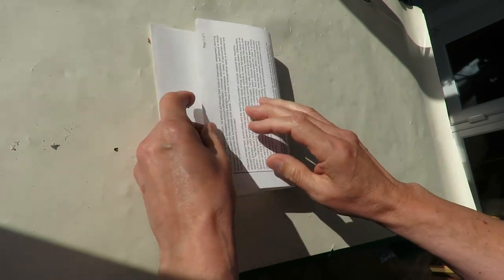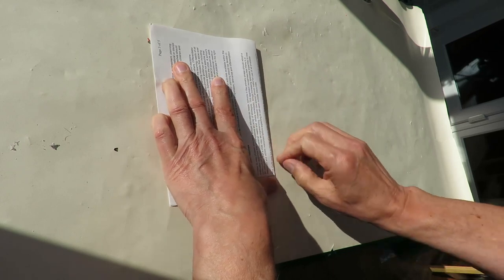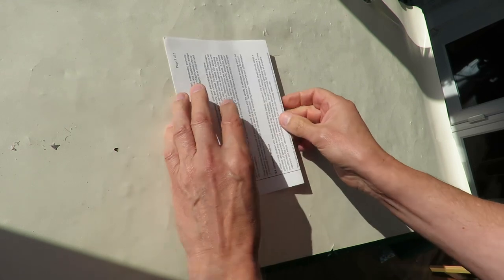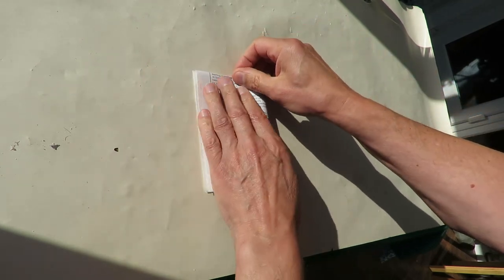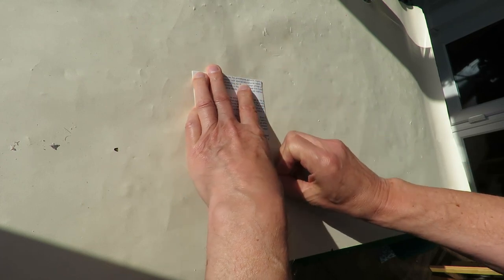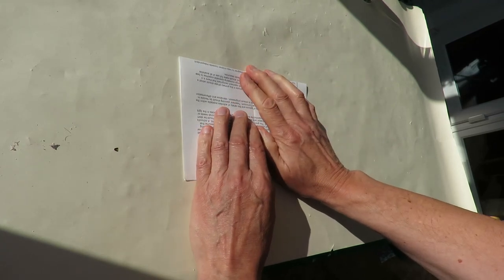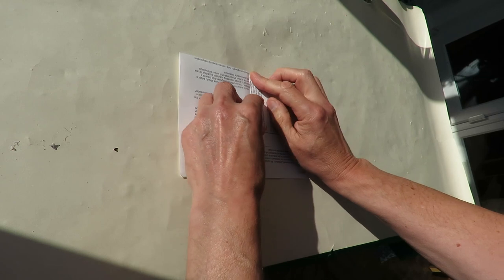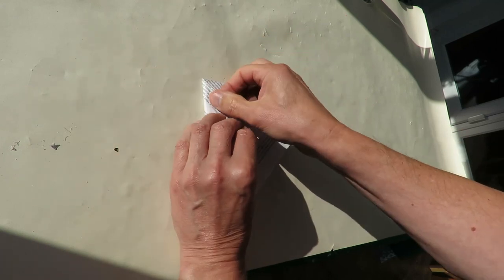A sheet of paper, fold it in half, slip the rubbish out of the way, right, fold it in half, fold it in half again, fold those corners down, fold it in half again.